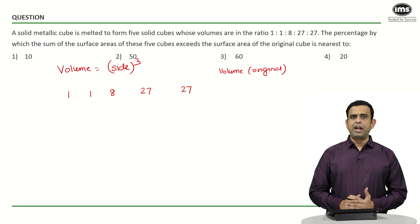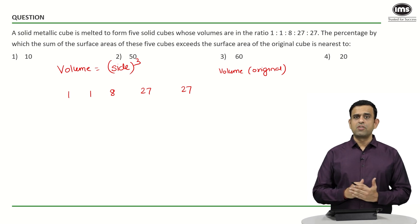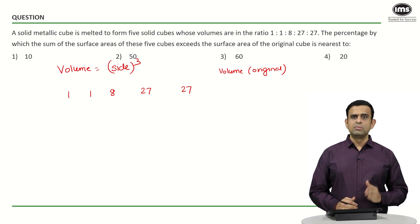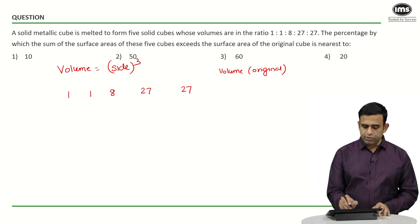Since when you melt an item, the volume before and after must be equal. If you add 1+1+8+27+27, you get 64.